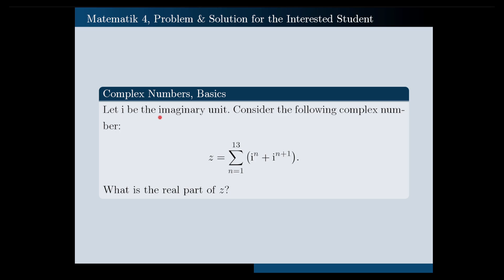Let i be the imaginary unit. Consider the following complex number: z equals the sum of i to the n plus i to the n plus 1, where n goes from 1 to 13. What is the real part of z?